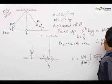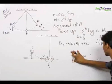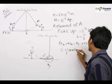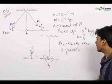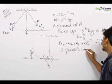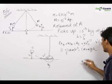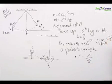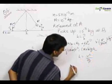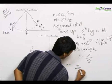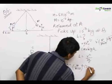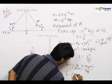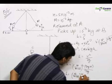We have v dash equal to m upon m plus m times root over 2gh. Potential energy at B is 0 plus half times m plus m times v dash squared equals potential energy at C, with kinetic energy at C equal to 0. The potential energy at C is m plus m times g times h. The m plus m cancels, giving us h equals v dash squared upon 2g. Substituting v dash, we get h equals m upon m plus m whole squared times 2gh upon 2g, and simplifying gives h equals m upon m plus m squared times h.